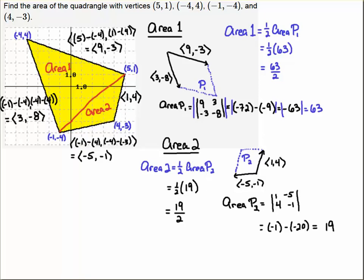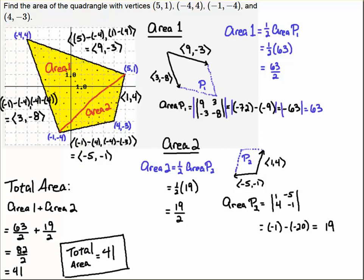If I want the total area, I just add those two areas together. So the total area is Area 1 plus Area 2, the area of those two triangles added together. That's 63 over 2 from this calculation up here and 19 over 2 from this calculation over here. Since I have a common denominator, I can just add those. I get 82 over 2, and 82 over 2 divided by 2 is 41. So the total area of this quadrangle, this region, is 41.